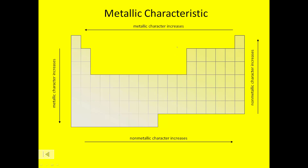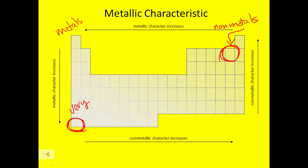Let's talk about metallic character. Your most metallic element is going to be down at the lower left corner of the periodic table, and your least metallic is going to be up at the upper right. Metals tend to be toward one side, nonmetals toward the other. If you are down in the lower left, you are very super metallic. If you are up in the upper right, you are not metallic at all.